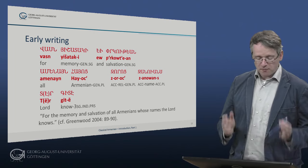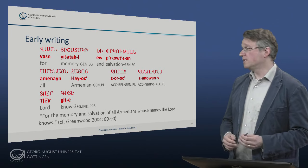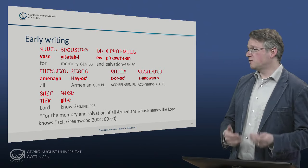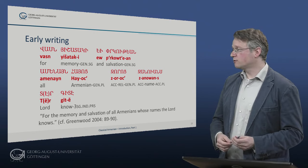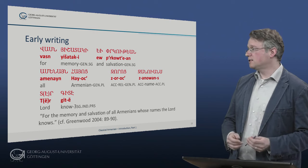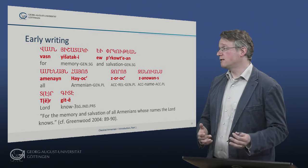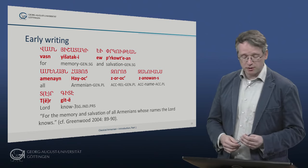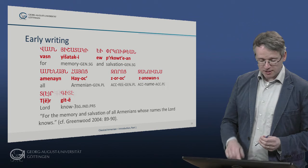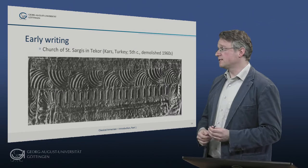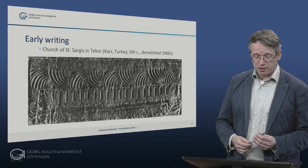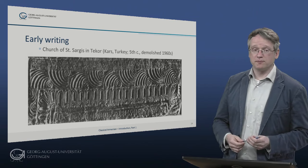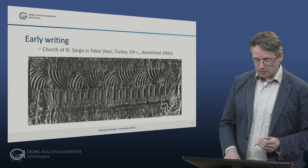The text means roughly 'for the memory and the salvation of all Armenians.' Here we have the name that the Armenians give to themselves — Hayk — in the genitive plural, and then the personal names Zorotz, Zanvans, Tergiti. Ter is the word for 'Lord,' and Giti is the inherited word for 'earth,' inherited from Proto-Indo-European. This is a very early inscription. The other early inscription is from Tekor, which Ron has already mentioned — that is in Kars in modern Turkey. This was the oldest inscription of Armenian that we had, which is unfortunately no longer extant.